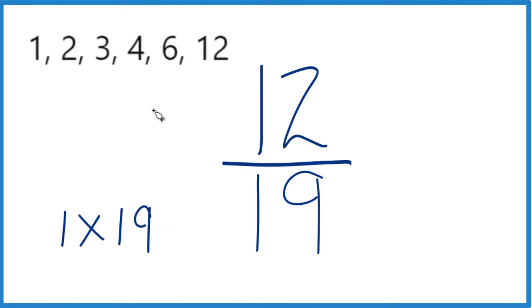So it looks like the greatest common factor, 19, that's not up here, 1 is. So 1 is the greatest common factor.